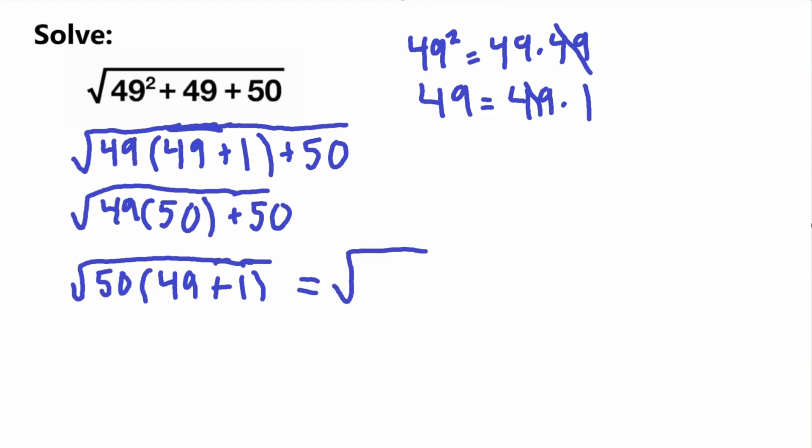Because 49 plus 1 is equal to 50. So we have square root of 50 times 50. And remember, when you multiply two numbers together, this is the same thing as squaring that number. So 50 times 50 is equal to 50 squared. And now, in case you didn't know, square root and square are opposite functions, so they cancel out with each other. So this squared and this square root cancel out with each other.